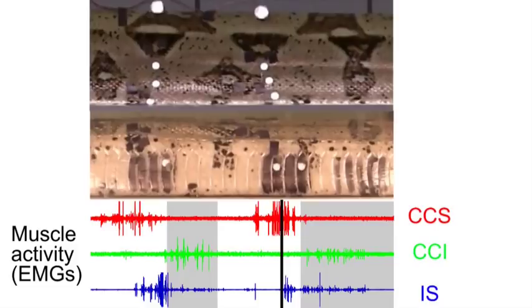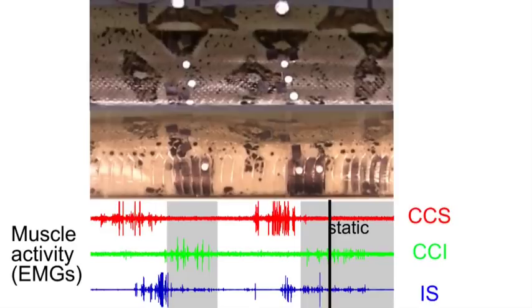The interscutalis first shortens the skin and then isometric activity during static contact keeps the skin from being stretched during the propulsive phase.